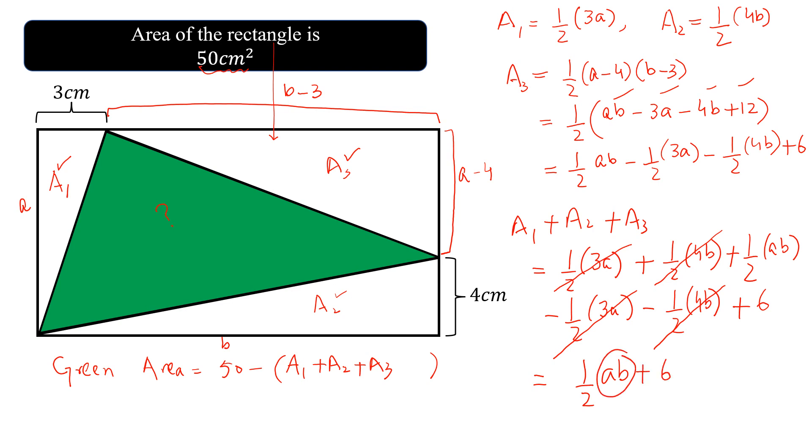Where this ab is equal to 50 cm square. ab is 50 cm square. So we put 50 here and half of 50 plus 6. This is equal to 25 plus 6 and this is equal to 31. So A1 plus A2 plus A3 is equal to 31. We put 31 here and 50 minus 31 is 19 cm square and this is the required green area.